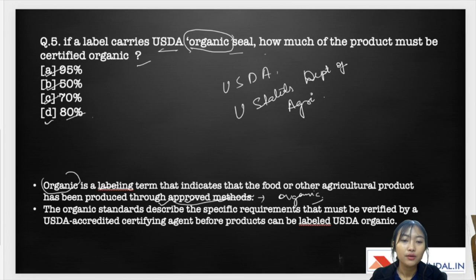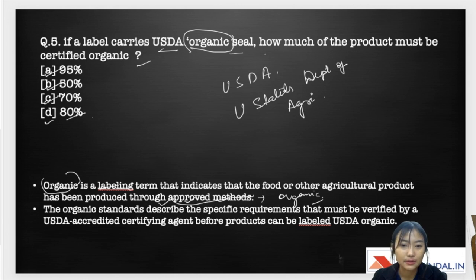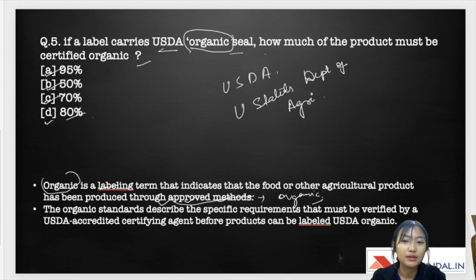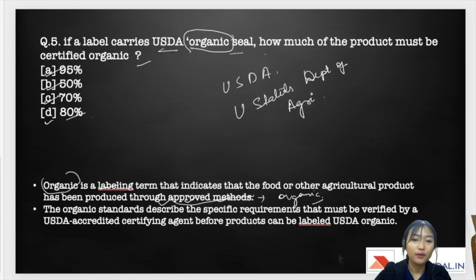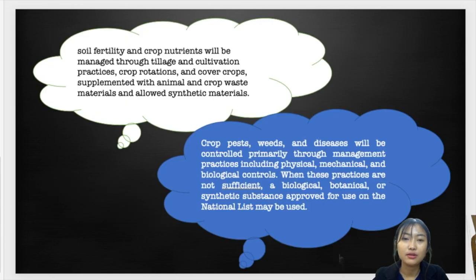Moving on to organic standards — there are different standards such as crop standards, livestock standards, and operations or handling standards. These organic standards describe the specific requirements that must be verified by a USDA-accredited certifying agent before a product can be labeled USDA Organic.